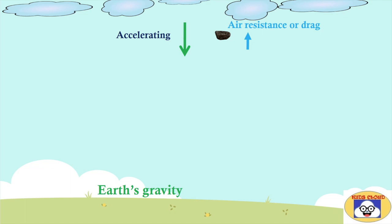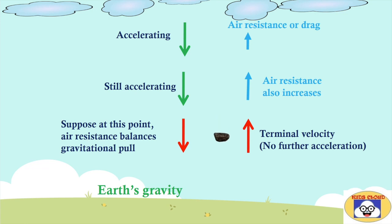Suppose at this point the air resistance balances gravitational pull. Then there will be no further acceleration, and the rock will fall with the constant velocity called as terminal velocity.